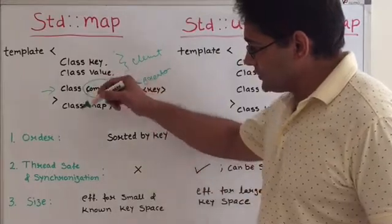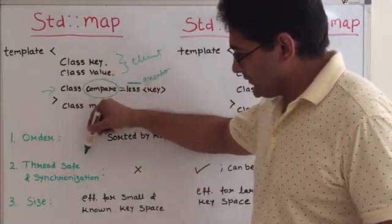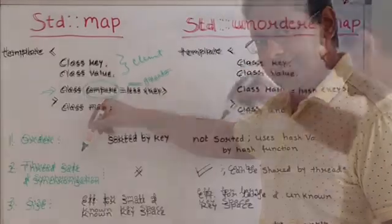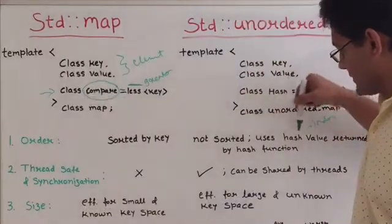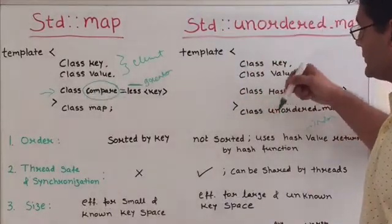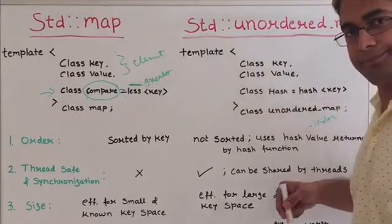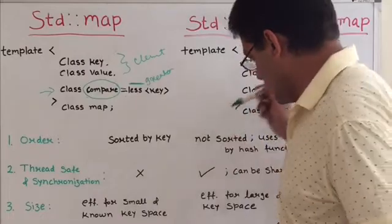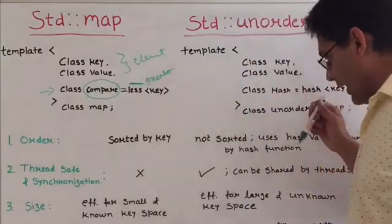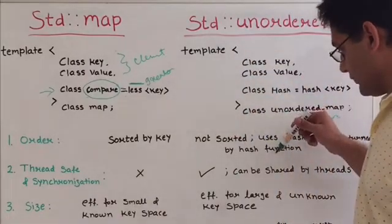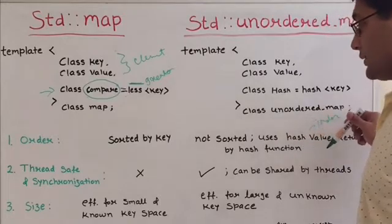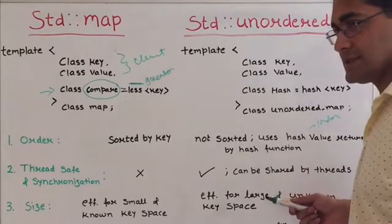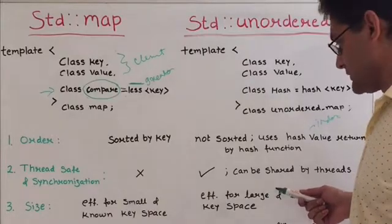Another difference is that using map is not thread-safe and the data cannot be synchronized in threads, whereas threads can share data if they are using unordered map. Maps are very efficient for small and known key space, whereas unordered map is very good for large and unknown key space — when we don't know how many times we are going to insert, search, or delete elements.